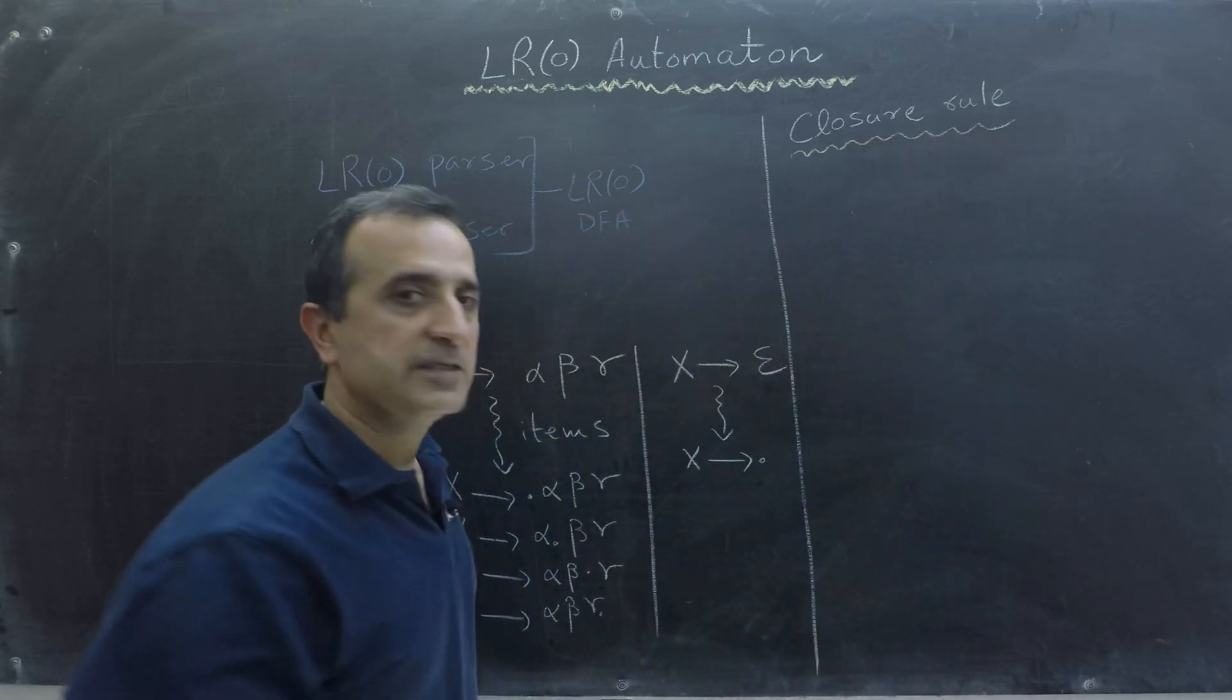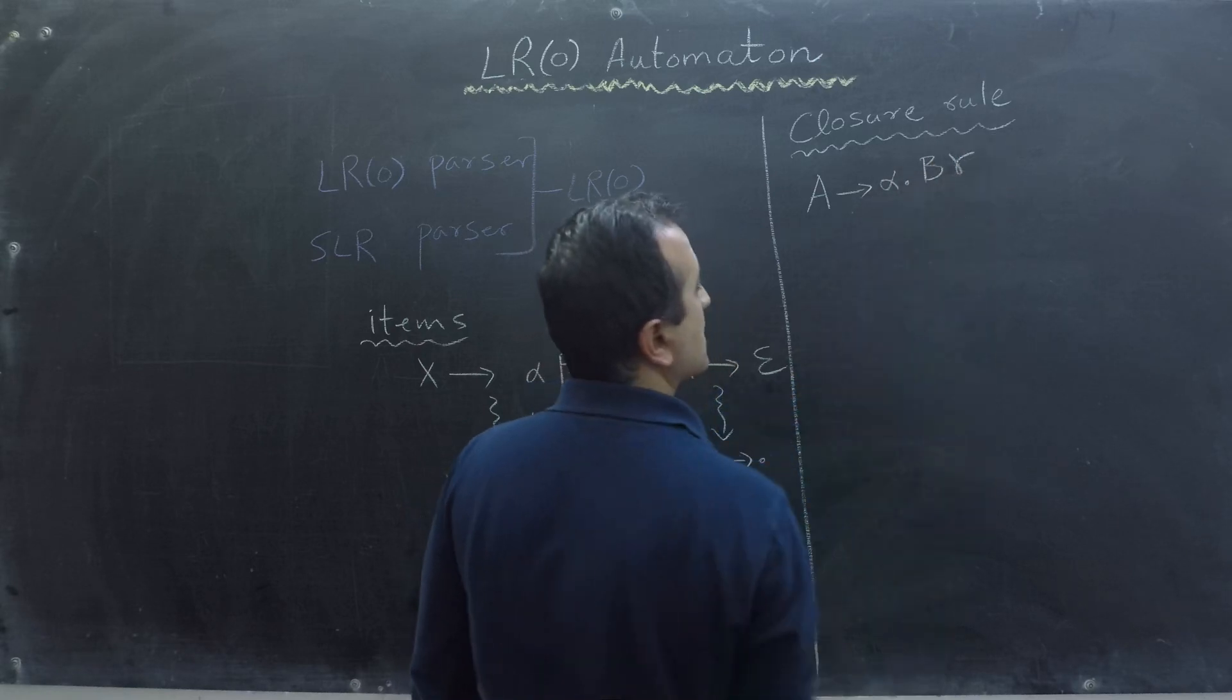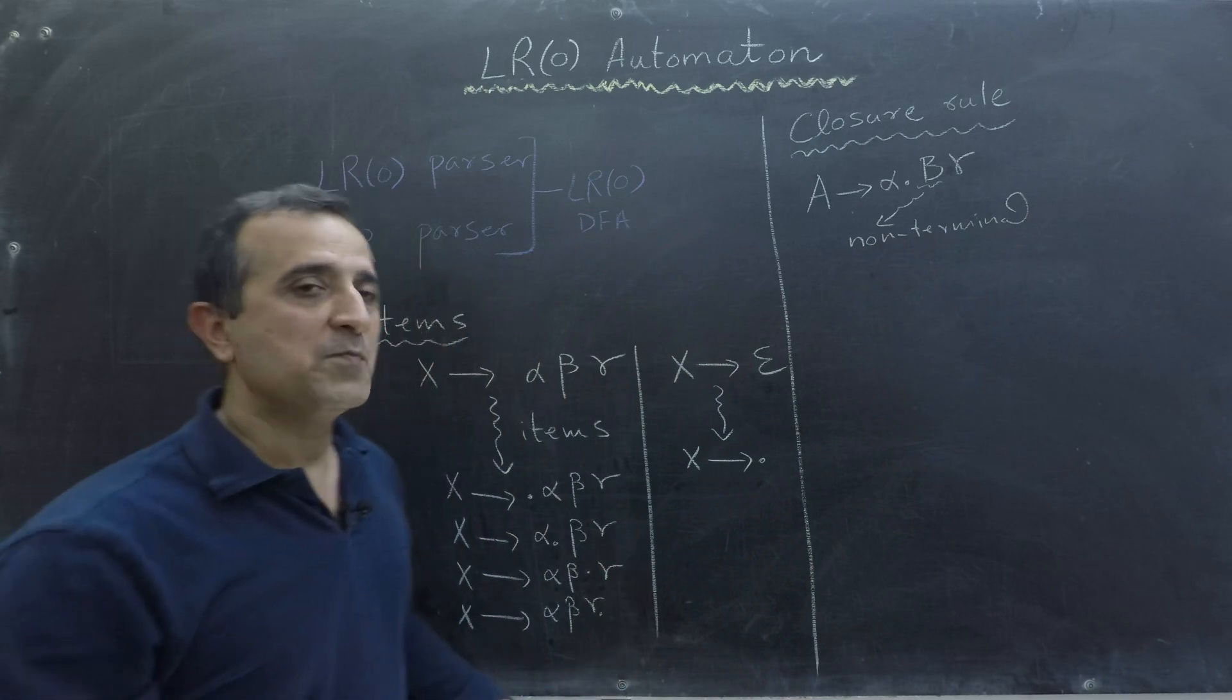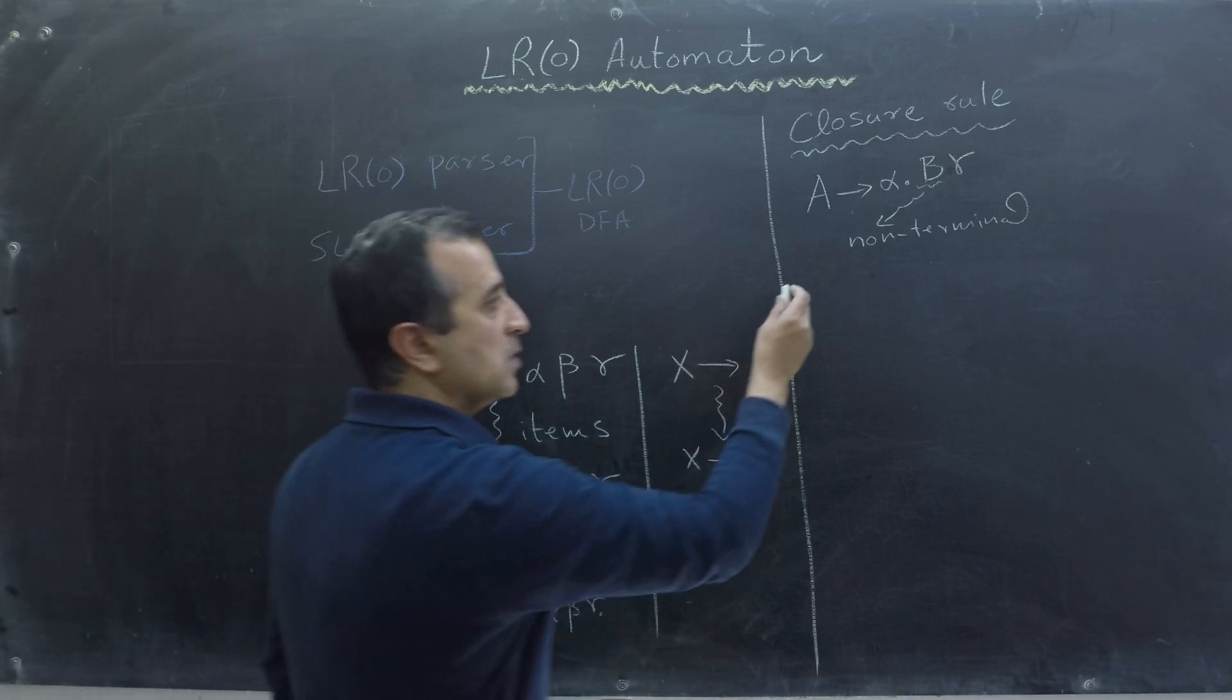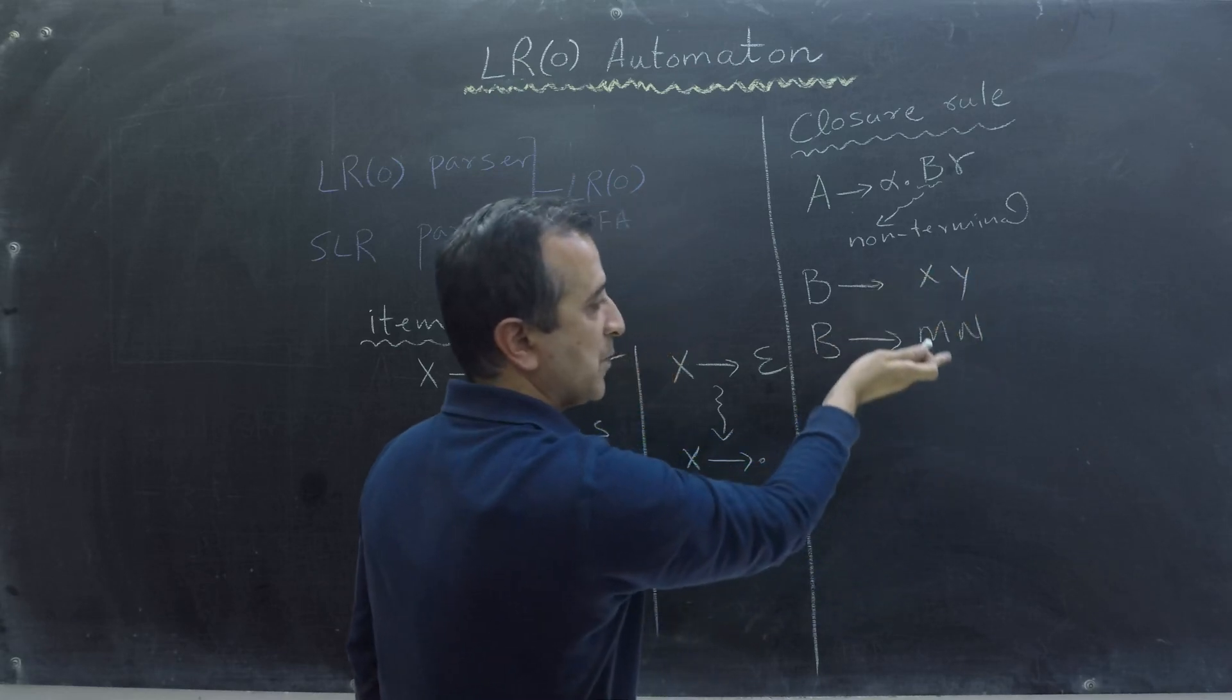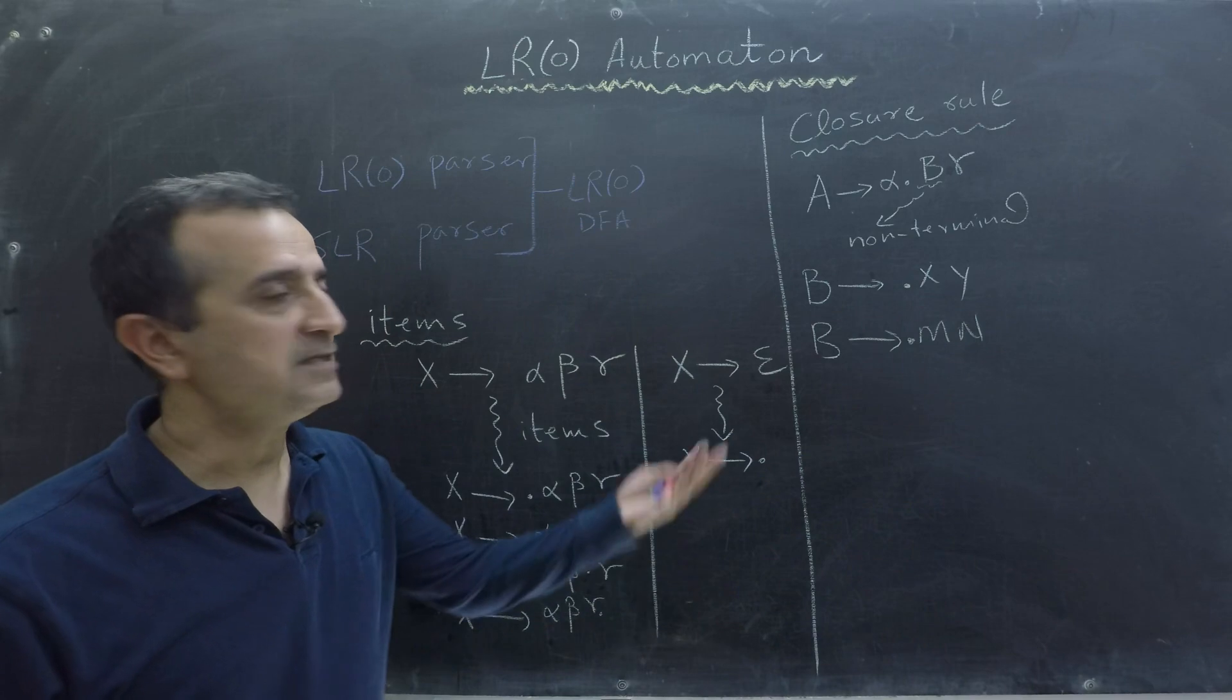If a state of DFA has item A goes to alpha dot B gamma where B is a non-terminal, then the Closure rule states that we must add all the productions of B in that state. So we must add productions of B say B goes to X, Y or B goes to M, N or all the possible productions of B in that state. And our dot must be at the beginning of the left-hand side of each production. So this is our Closure rule, simple enough.